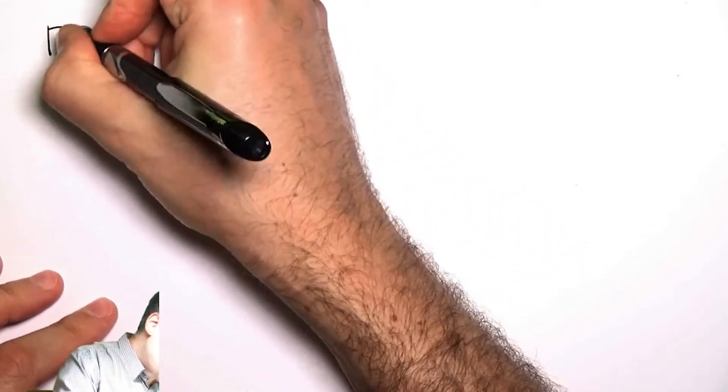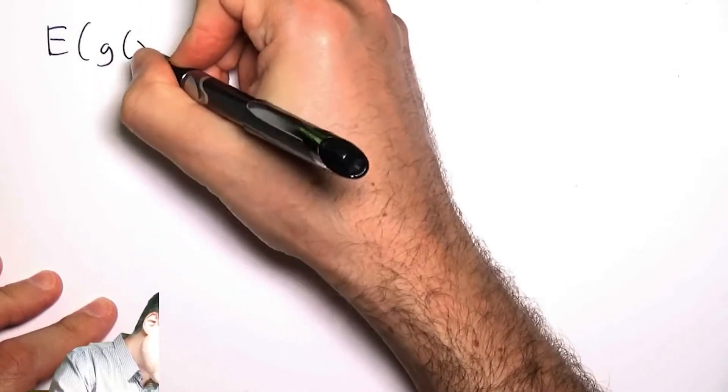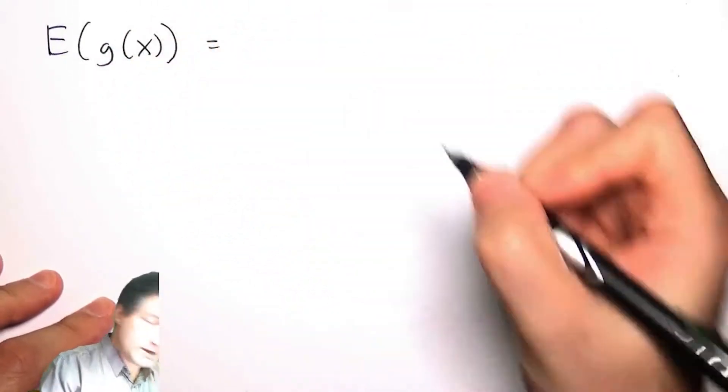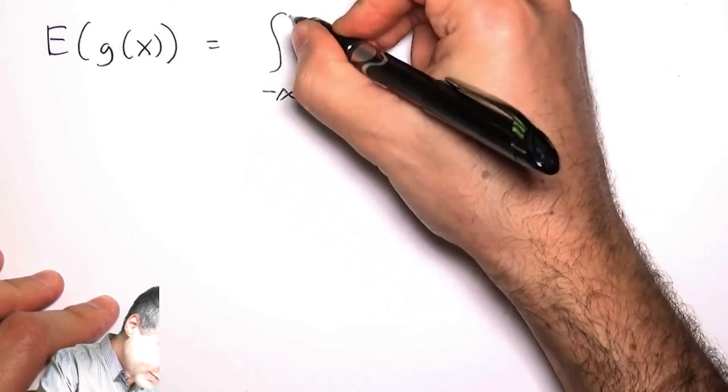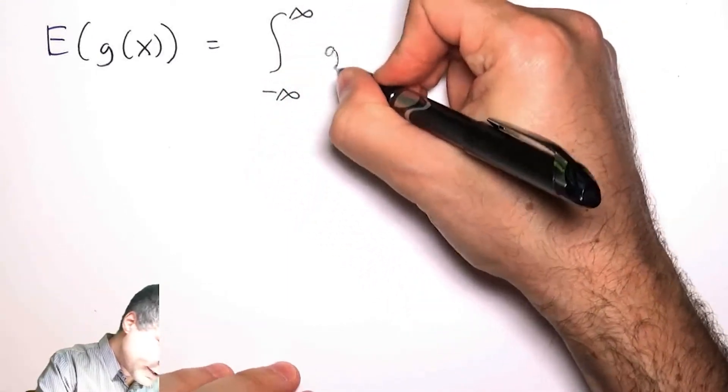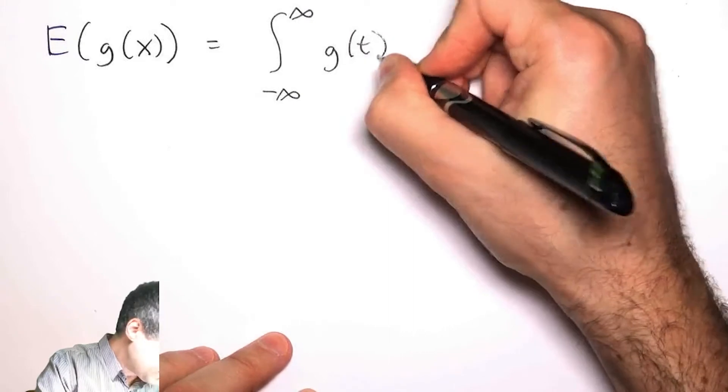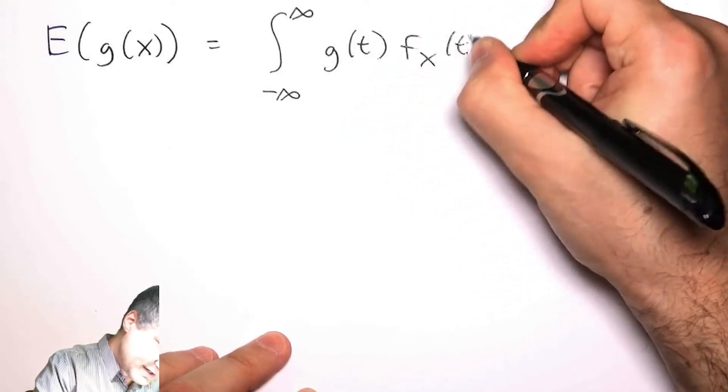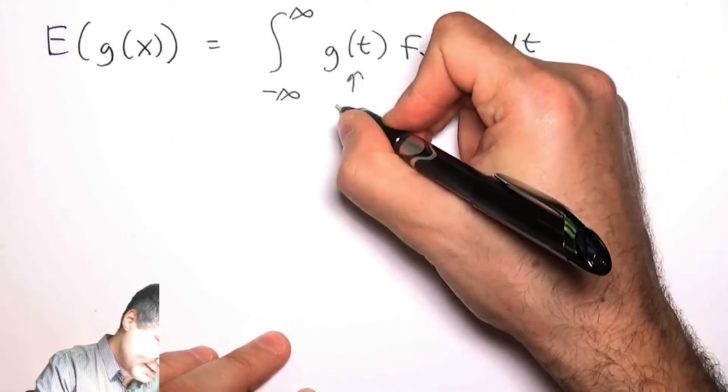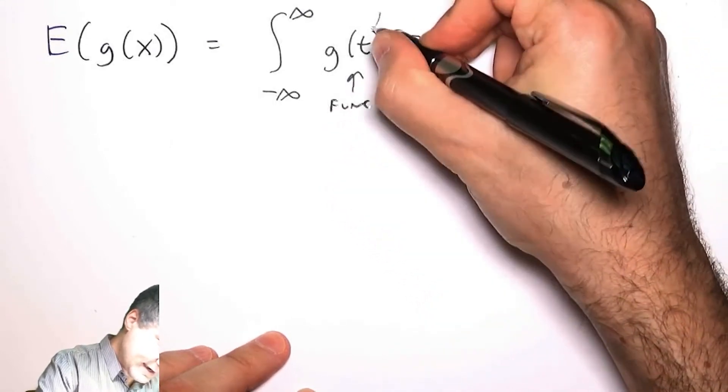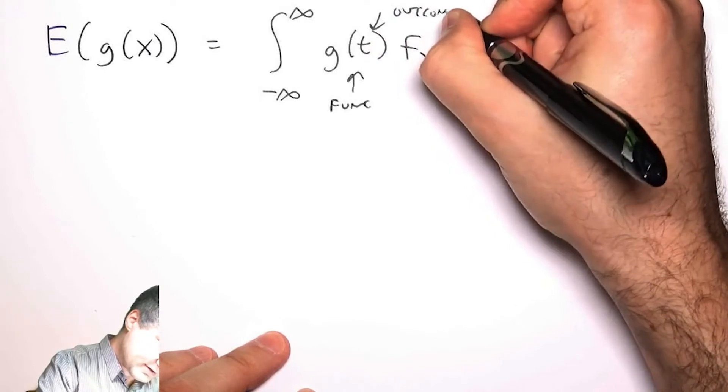We talked before about functions that are random variables. The next thing I want to talk about is the expected value of some function of X. Just like in the discrete case, it has a similar form. I have the function of X that I care about times the PDF, so this is the PDF, this is the function, and this is a given outcome.